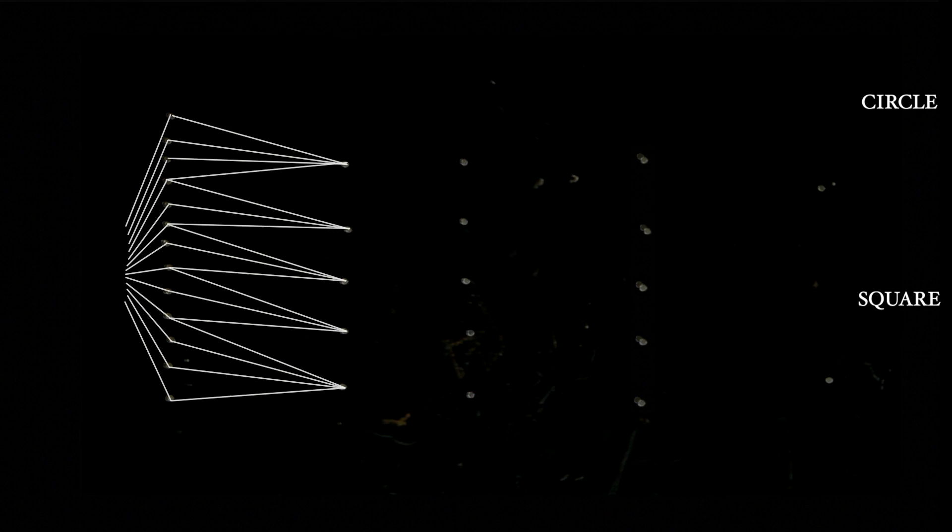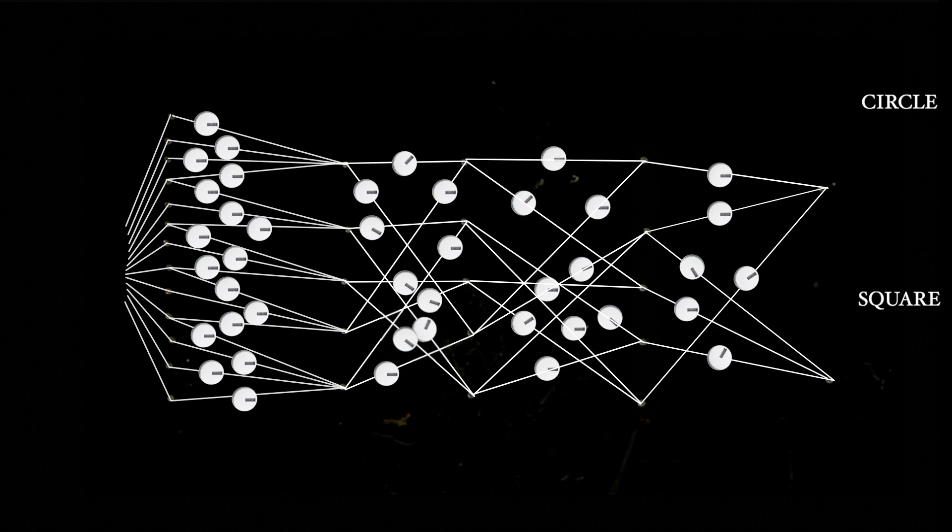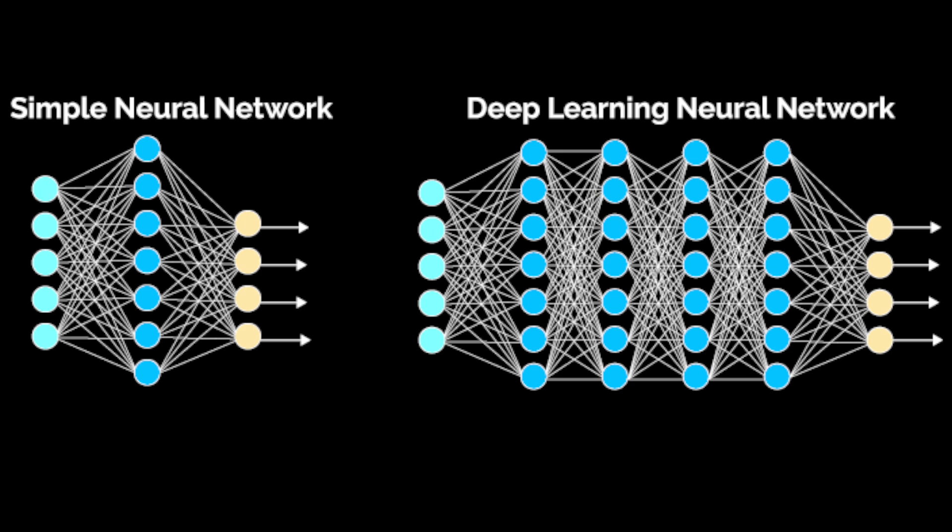But more importantly, when he instead created a brand new layer in the network and added new connections to it, it was then able to solve more difficult problems. Because it creates an extra processing step in the activation pattern, which allows more complex patterns to be differentiated. That's the key. His experiments confirmed what others had predicted. Adding more layers to a network gave it more abstraction power. This is the essence of what we now refer to as deep learning today.